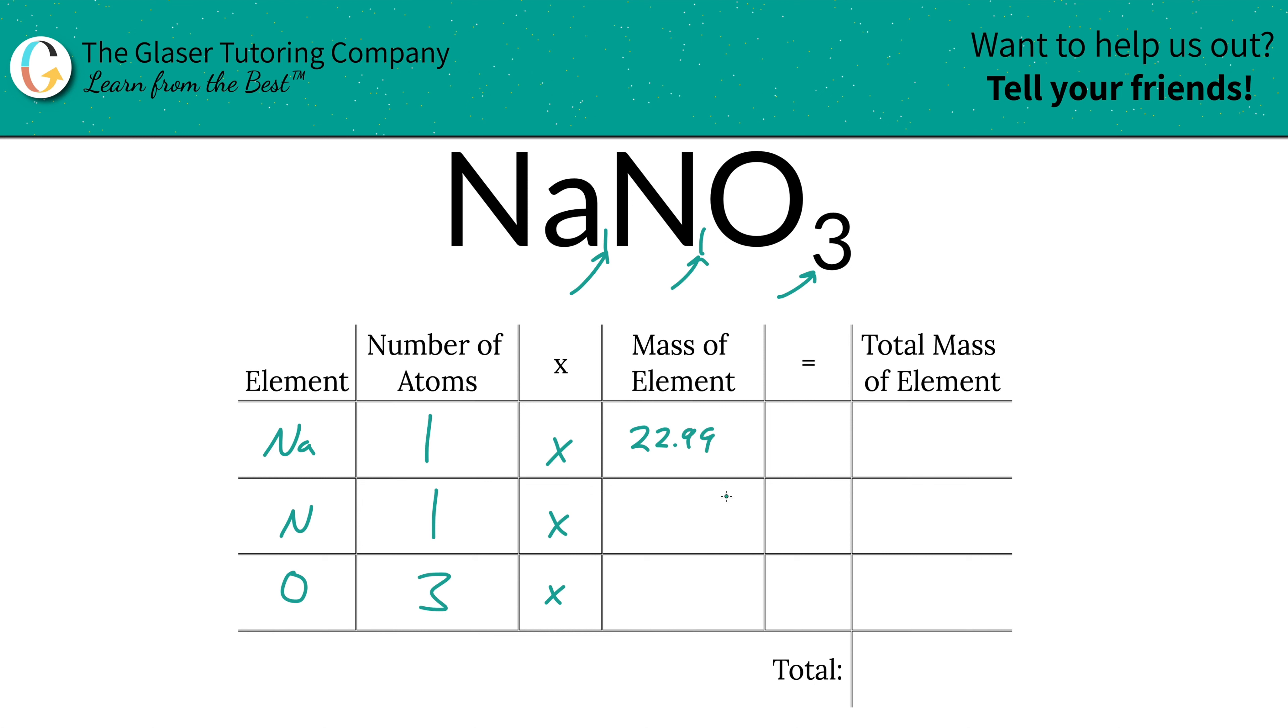So that's what we're going to write down, 22.99 for sodium. Nitrogen was 14.01, and then oxygen was 16. And then we're simply going to multiply the row across to find the total mass of the element.